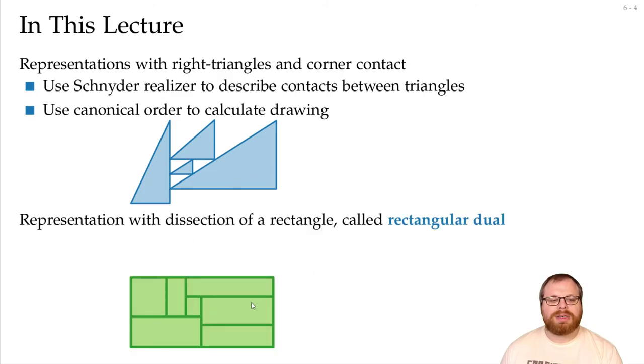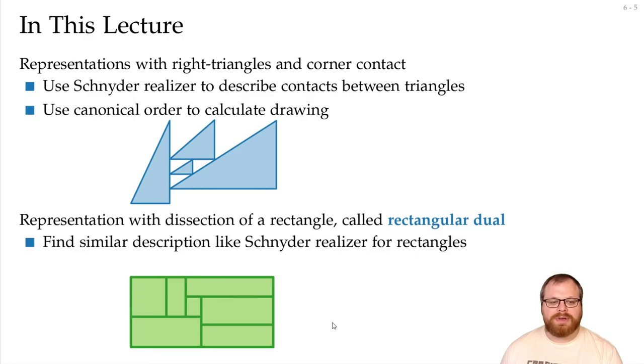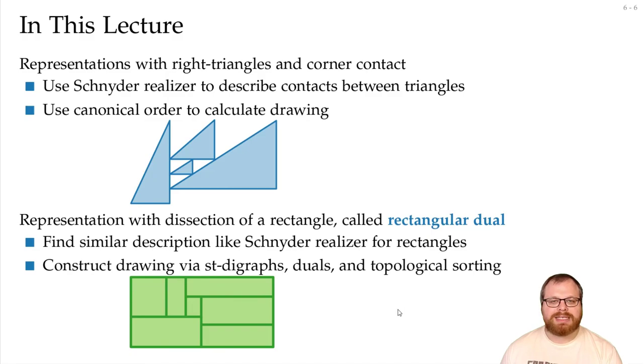Then, we have a look at the dissections of a rectangle, which is called a rectangular dual. So basically, this is a contact representation of rectangles, where the union again is a rectangle, and we don't have any holes. And for that, we find a similar description like Schnyder realizer for rectangles, and we construct drawings via ST-digraphs, duals, and topological sorting.